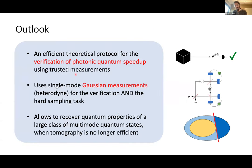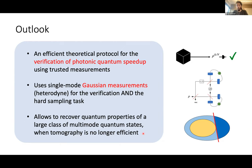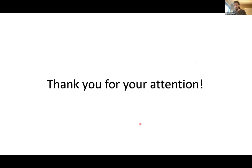To conclude, I've presented an efficient theoretical protocol for verification of photonic quantum speedup using trusted measurements. It uses parallel single-mode Gaussian heterodyne measurements for verification, and the hard sampling task. You can switch between the two tasks just by adjusting the reflectivity of the beam splitter. As other applications, these techniques allow you to recover quantum properties of complicated multimode states when tomography can no longer do it efficiently. Thank you for your attention and I'm happy to answer questions.